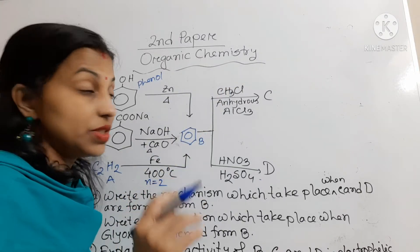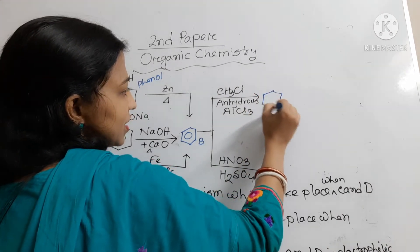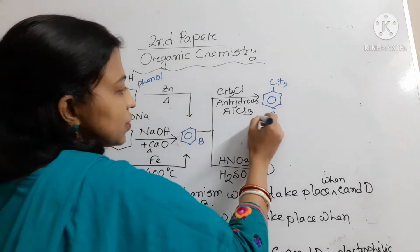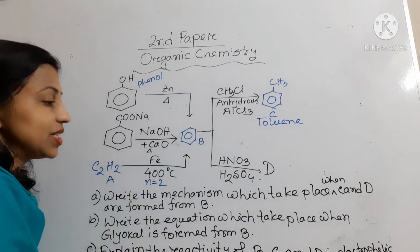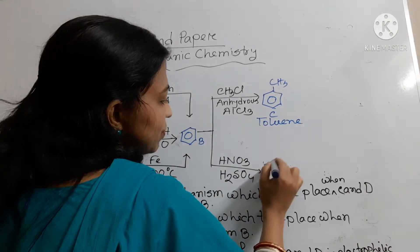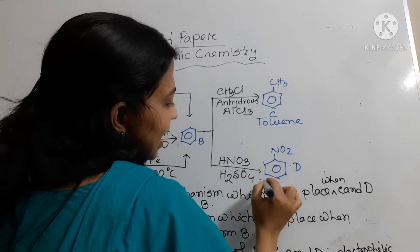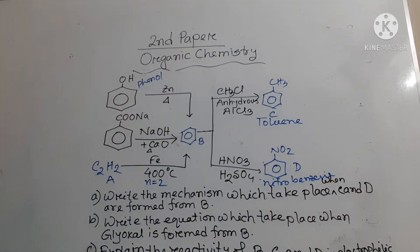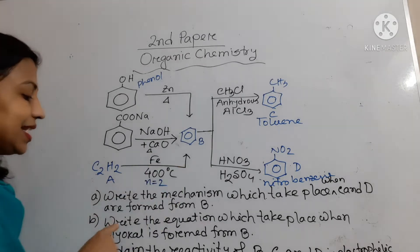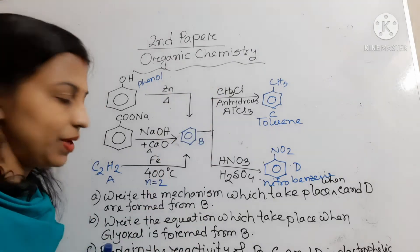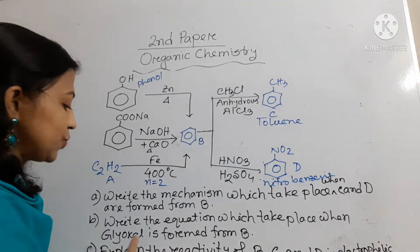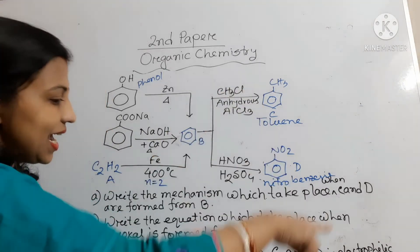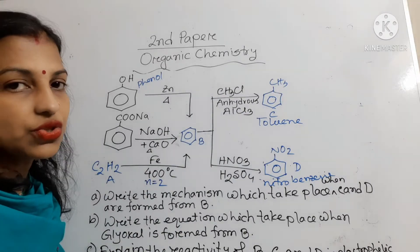When benzene reacts with methyl chloride in presence of anhydrous aluminium chloride, the product is toluene — this is C. When benzene reacts with nitric acid in presence of sulfuric acid, it forms nitrobenzene — this is D. The questions are: (1) Write the mechanism when C and D are formed from B. (2) Write the equation when benzene forms glyoxal. (3) Explain the reactivity of B, C, and D in electrophilic substitution reaction.